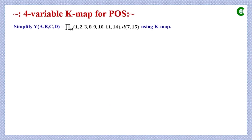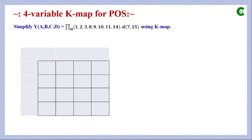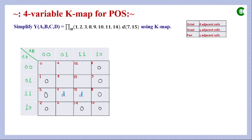Next we move to an example expressed in terms of max terms, also defined by four variables. We can see the max terms listed, along with two don't care terms: 7 and 15. We draw the K-map, mark the variables and their values, mark the cells, fill cells for max terms with 0, and fill don't care cells with D. No octet is possible since there are no eight adjacent zero cells.